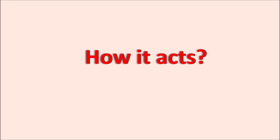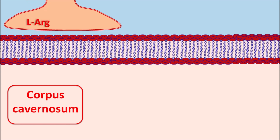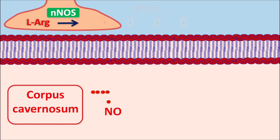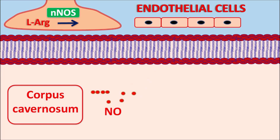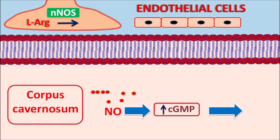Now let us see how this drug acts. The primary site of action of avanafil is the corpus cavernosum, where nitric oxide plays an important role. Nitric oxide is synthesized within neurons from L-arginine as a precursor by nitric oxide synthase enzyme. This nitric oxide then enters into the corpus cavernosum. Some nitric oxide can also be released from endothelial cells. Nitric oxide elevates cyclic GMP levels, which promotes relaxation. This cyclic GMP is metabolized to GMP, which controls the action of nitric oxide. Avanafil inhibits this metabolism, thereby increasing cyclic GMP levels and promoting the action of nitric oxide.